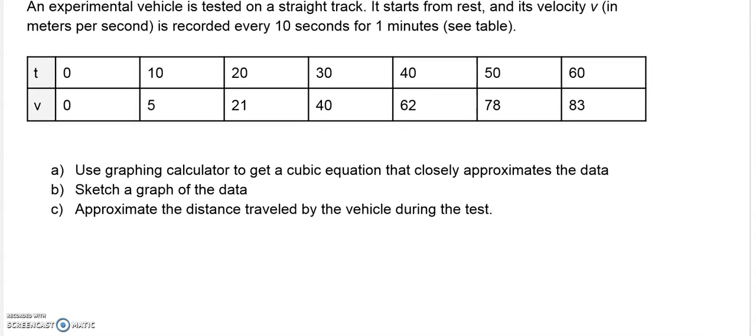So here we have our data. In order to make sense of the data, we're going to use our graphing calculators to get a cubic equation. So that would be AX to the third plus BX squared plus CX plus D. That's when you do your regression model on your calculator to come up with that equation.